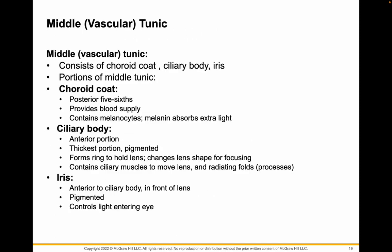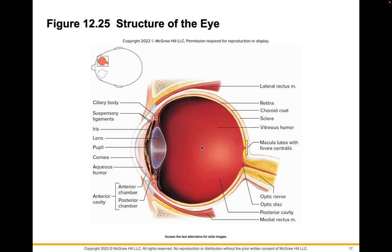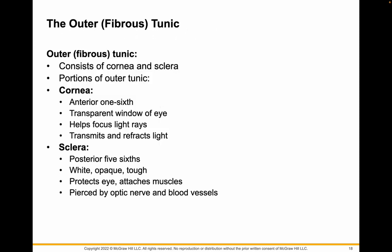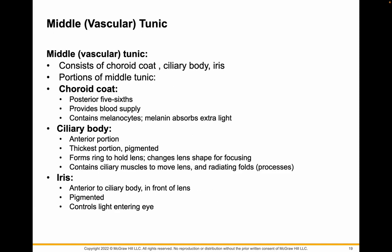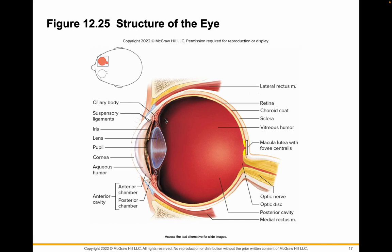The middle tunic has the choroid coat, ciliary bodies, and the iris. The choroid coat provides blood and also has melanocytes to absorb light, because melanin is a pigment and all pigments absorb light. The ciliary body forms rings to hold the lens and can change the shape of it for focusing — it has ciliary muscles that look muscular.